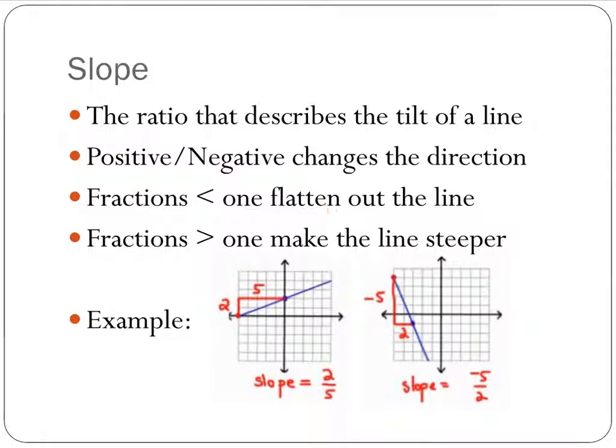Fractions less than 1 makes it flatter. It's like here, notice 2 fifths is my slope. That's smaller than 1. And a fraction bigger than 1, this case 5 halves, makes it steeper. And you can use these as your two examples here. Again, slope is what we're talking about.